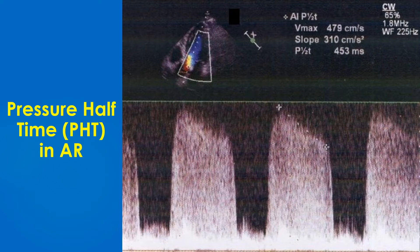The peak velocity or Vmax of the aortic regurgitation jet is shown as 479 cm per second. AR PHT is shown as 453 ms. The AR deceleration is shown as 310 cm per second squared.